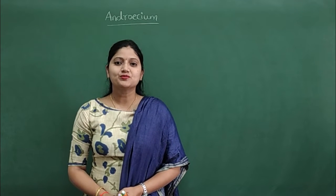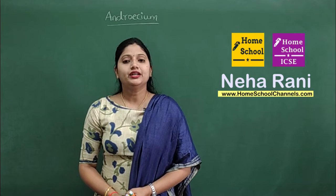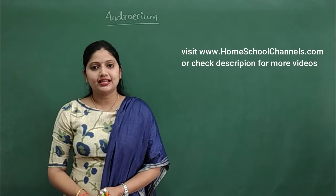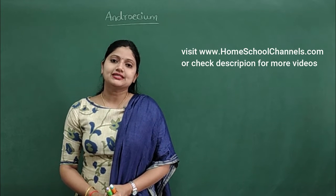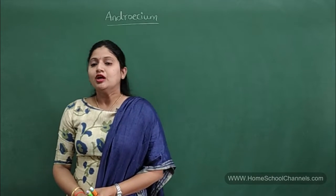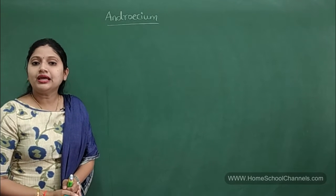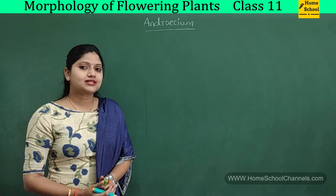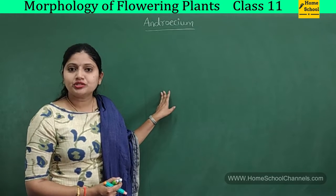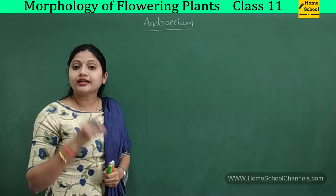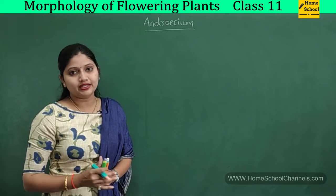Hello everyone, welcome to homeschool. In the previous class we were studying the parts of a flower, and among them we completed two — the calyx and corolla. Today we will see the remaining two parts of the flower, that is the androecium and the gynoecium. We had studied four whorls, and among them two were the essential or necessary whorls directly involved in reproduction — the androecium and the gynoecium.